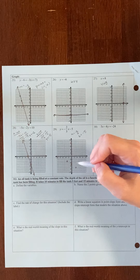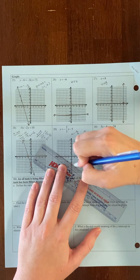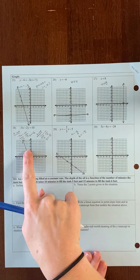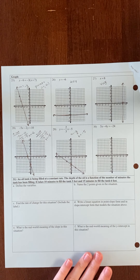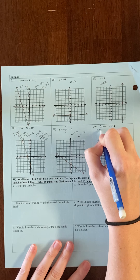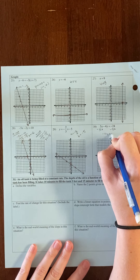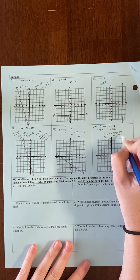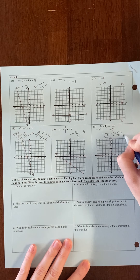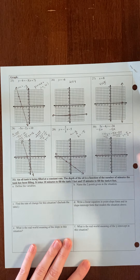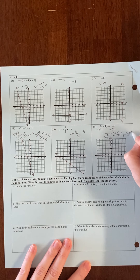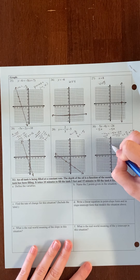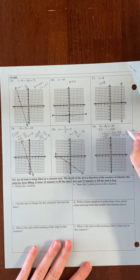Number 28 is in standard form. There are two ways you can graph standard form: you can convert it to y equals mx plus b by solving for y, or you can find the x and y intercepts. I'm going to find the x and y intercepts. For the x-intercept, I plug in 0 for y, so negative 2y goes away and I have negative 5x equals 10. Dividing both sides by negative 5, x equals negative 2. For the y-intercept, I plug in 0 for x, leaving negative 2y equals 10. Dividing by negative 2, y equals negative 5. I use a straight edge to connect them, extending beyond the points and including arrowheads.